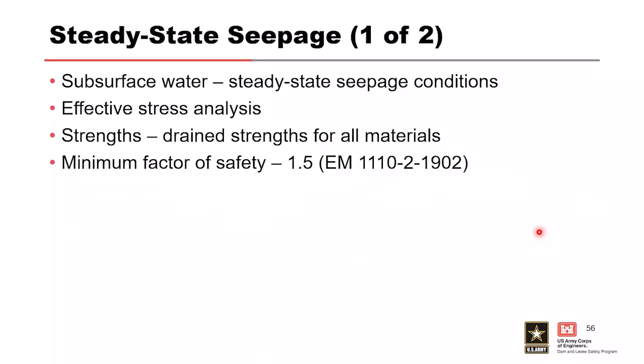For steady state seepage, water conditions come from a steady state seepage analysis—typically a SPOA design flood or PMF, though this may shift with risk-informed design. An effective stress analysis using drained strength for all materials is performed. The minimum factor of safety required by EM 1902 is 1.5. Results with the reservoir elevation near the design flood elevation show a factor of safety from a steady state SEEP/W analysis fed into SLOPE/W.